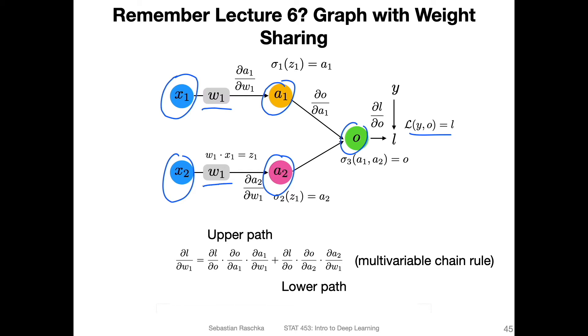So when we are computing the partial derivative of the loss with respect to the weights, or this one weight here, for gradient descent, what we do is, like always, we backtrack. We start here,